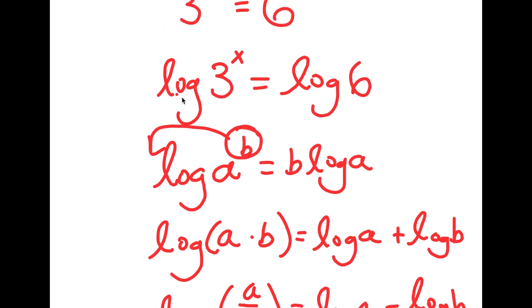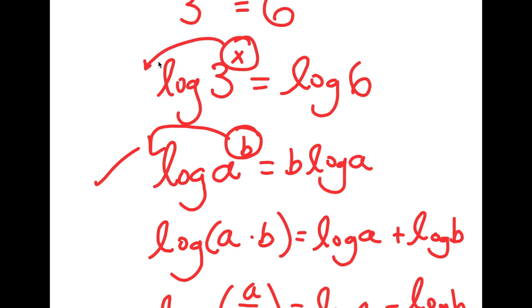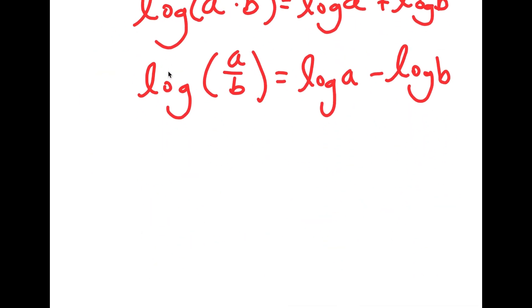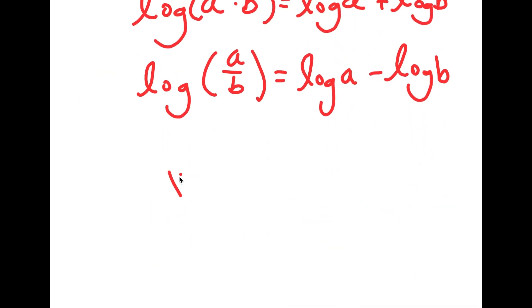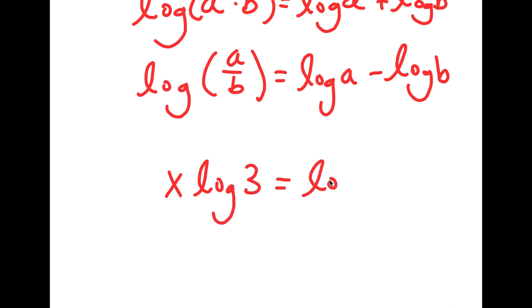So we have log 3 to the power of x equals log 6. And we can use our first property here — log a to the power of b is equal to b times log a — so I can move x to the front, and I get x times log 3 is equal to log 6.